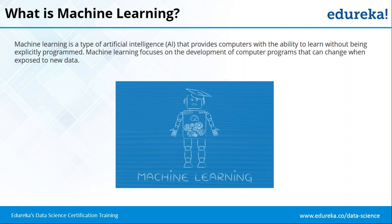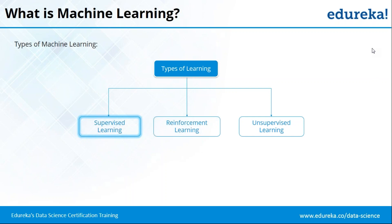Machine learning is divided into three subcategories: supervised learning, reinforcement learning, and unsupervised learning. Supervised learning is when you train your program with already existing outputs — you train it with datasets so it recognizes what you're talking about.